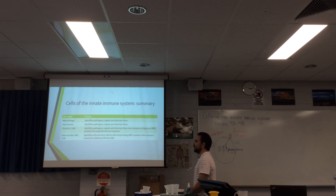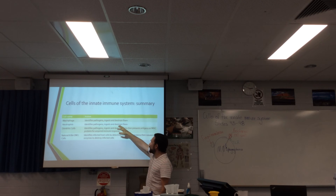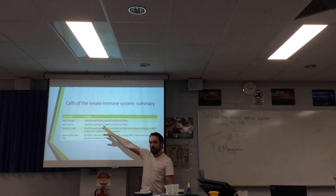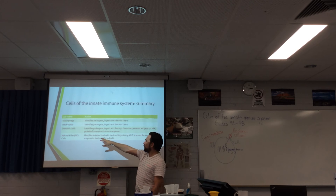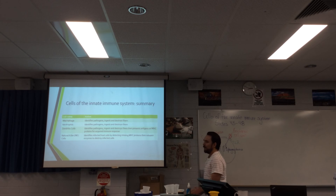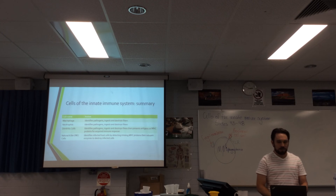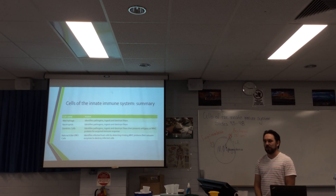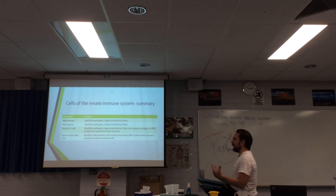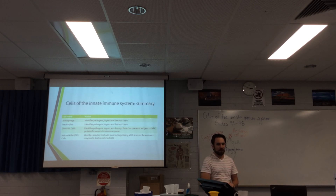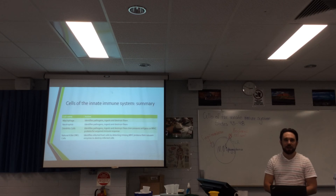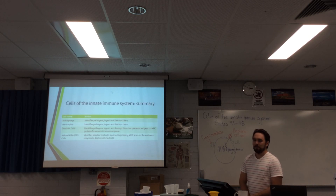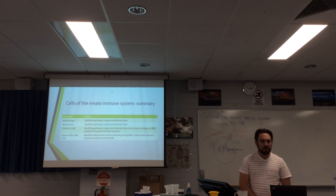Quick summary of the cells of innate immunity: macrophages identify, ingest, and destroy pathogens. Neutrophils identify, ingest, and destroy. Dendritic cells identify, ingest, destroy, then present antigens on MHC proteins. Natural killer cells identify infected host cells by detecting missing MHC, then release enzymes that destroy those infected cells. This system is amazingly complex and could easily go wrong — and sometimes it does. But it's pretty good, and it's the reason we don't get sick all of the time.